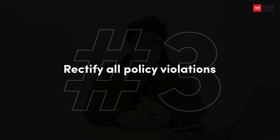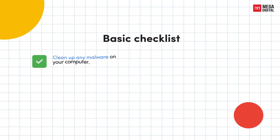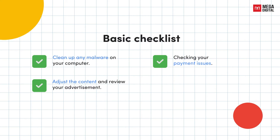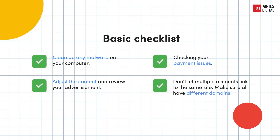The next big step is to rectify all policy violations of your account. We provide a basic checklist for your account. First, clean up any malware on your computer. Next, adjust the content and review your advertisements. You should also check your payment issues. And remember, don't let multiple accounts link to the same site — make sure all have different domains.